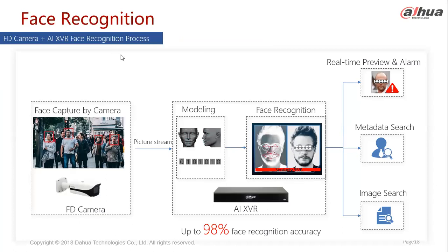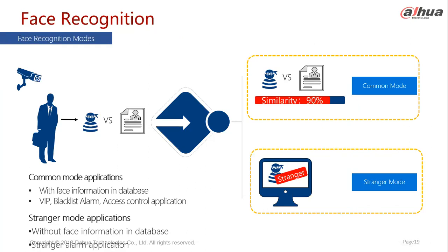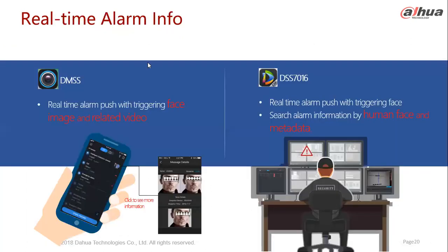For facial recognition, the camera does face detection and the XVR handles the processing. We talked about how to achieve facial recognition in a Dahua system using FD or FR cameras. Alarms from products can be monitored either from your mobile phone using the DMSS app, which is cross-platform — available on iOS and from the Play Store.